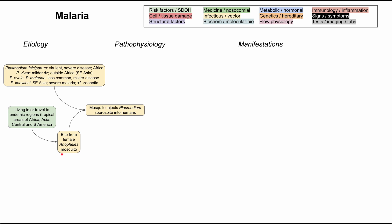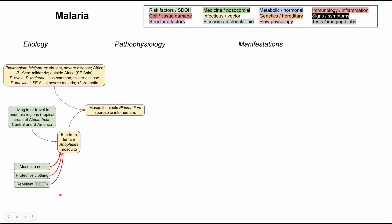Since you need a mosquito to transmit malaria, one of the most effective forms of malaria prophylaxis is preventing mosquito bites. This includes mosquito nets, protective clothing such as pants and long-sleeve shirts that cover exposed skin, and mosquito repellent — specifically using the chemical DEET. There is also chemoprophylaxis for malaria with varying levels of efficacy, but these physical prevention measures are considered more definitive.